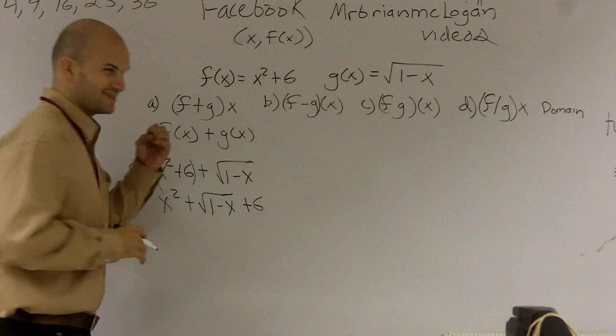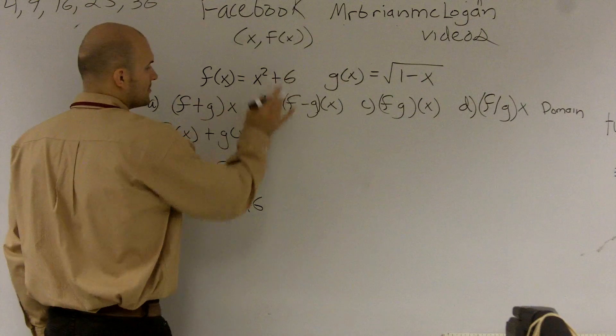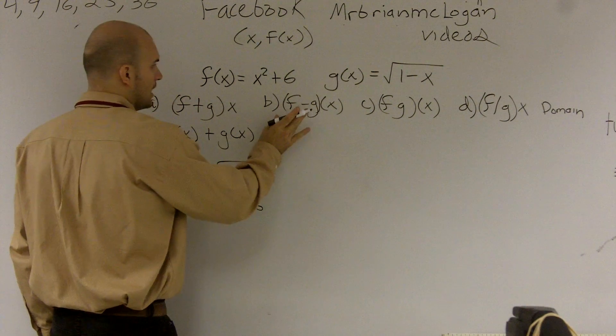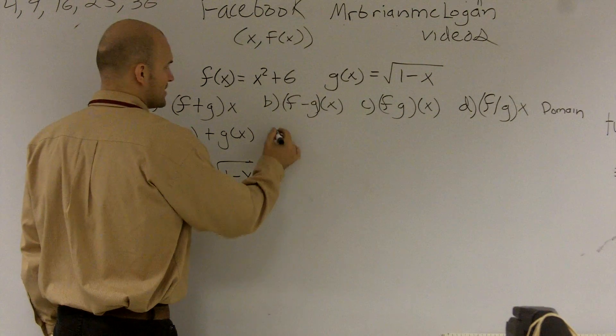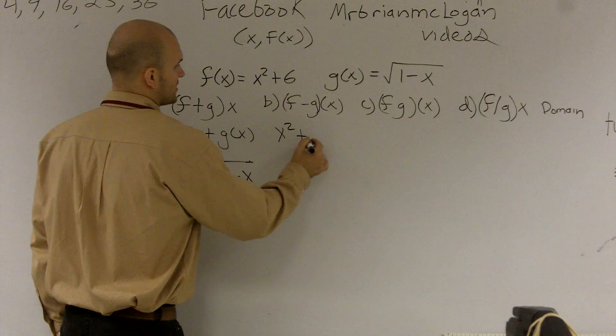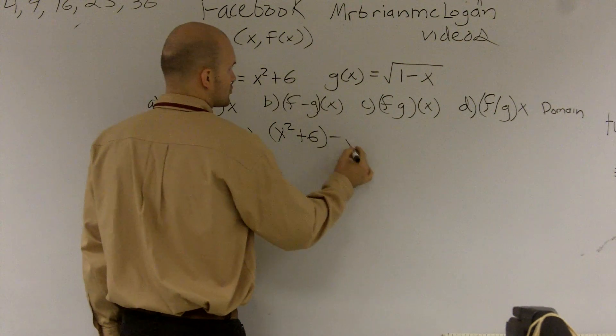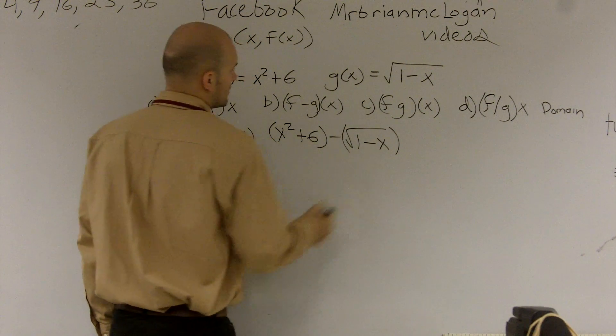All right, f minus g. This is a very important one. The reason why is f minus g because we need to make sure we're remembering how we're subtracting. So we have x squared plus 6 minus square root of 1 minus x.